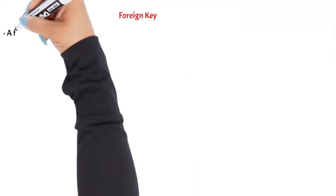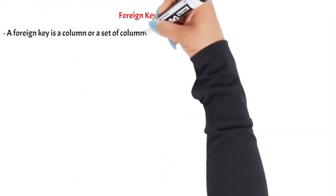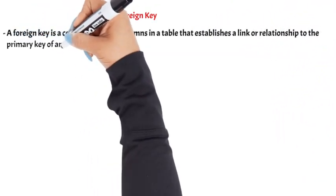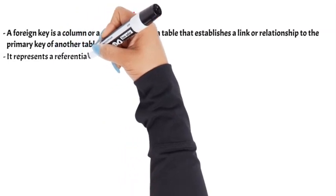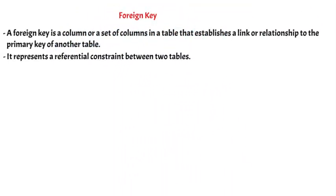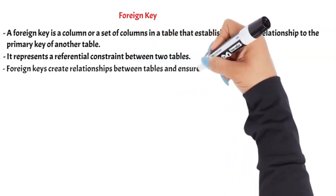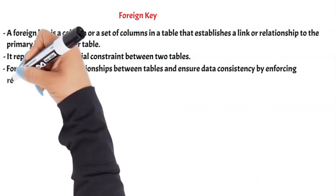Foreign key. A foreign key is a column or a set of columns in a table that establishes a link or relationship to the primary key of another table. It represents a referential constraint between two tables. Foreign keys create relationships between tables and ensure data consistency by enforcing referential integrity.